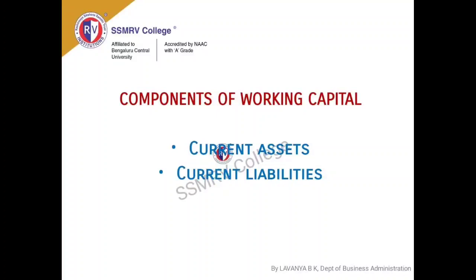The fifth type is permanent working capital — the minimum amount of working capital that must be kept with the company, not to be used unless there is an emergency or utter requirement. It's the capital kept for any contingencies you might face in the future. The sixth type is temporary or variable working capital — capital that you accumulate at the time of requirement, something ad hoc, done when a requirement is felt, to take care of contingencies or make up for a situation.